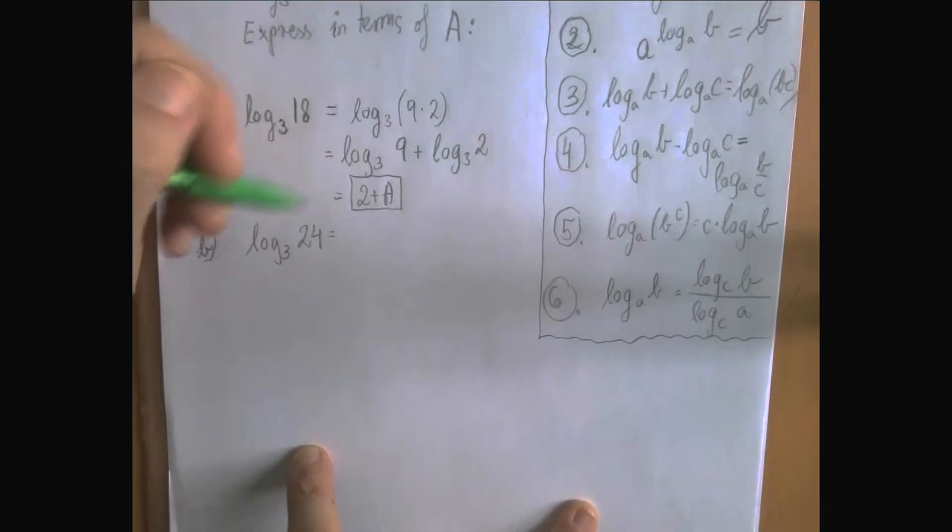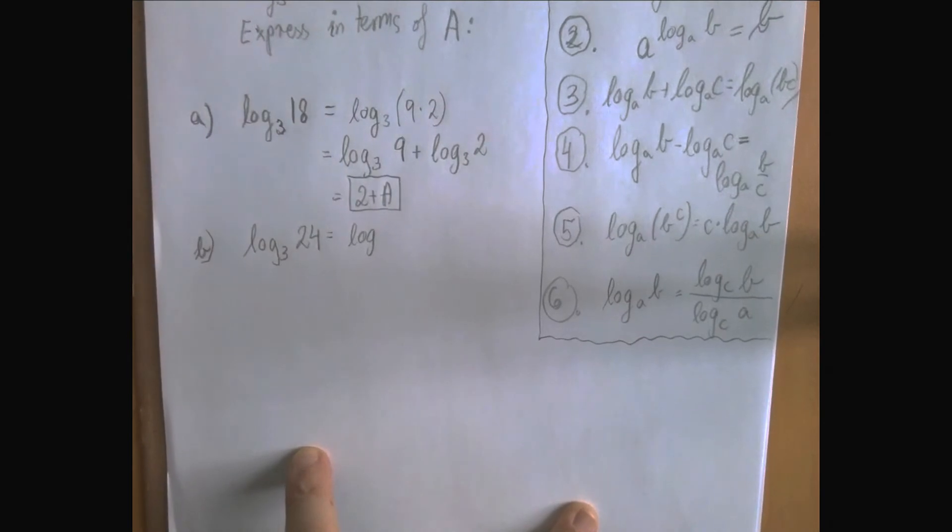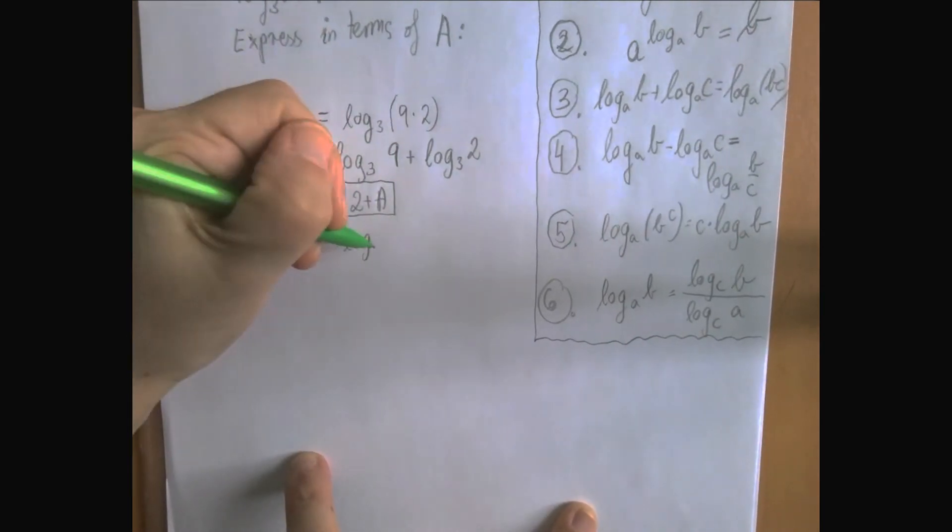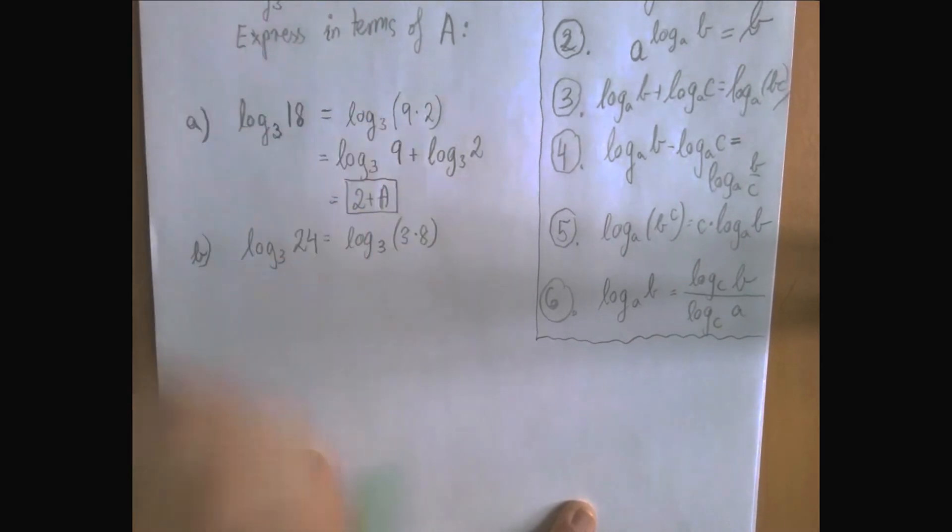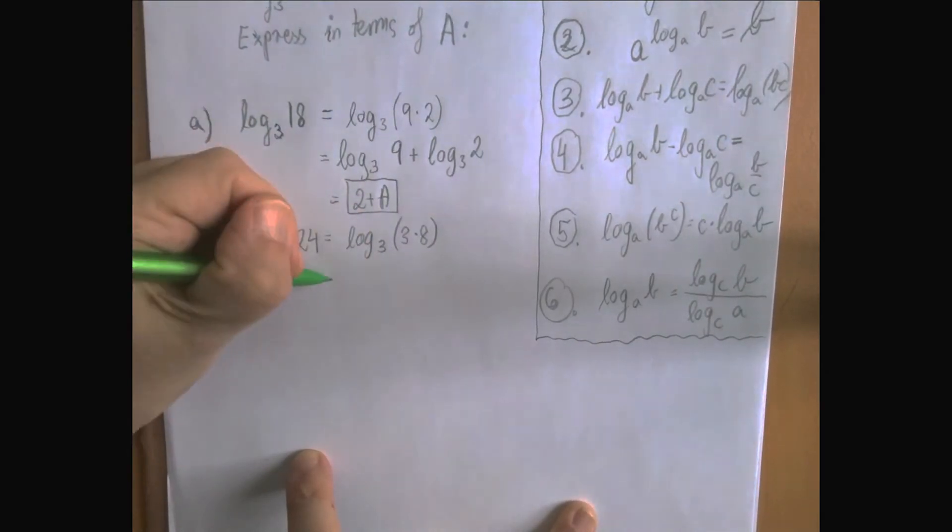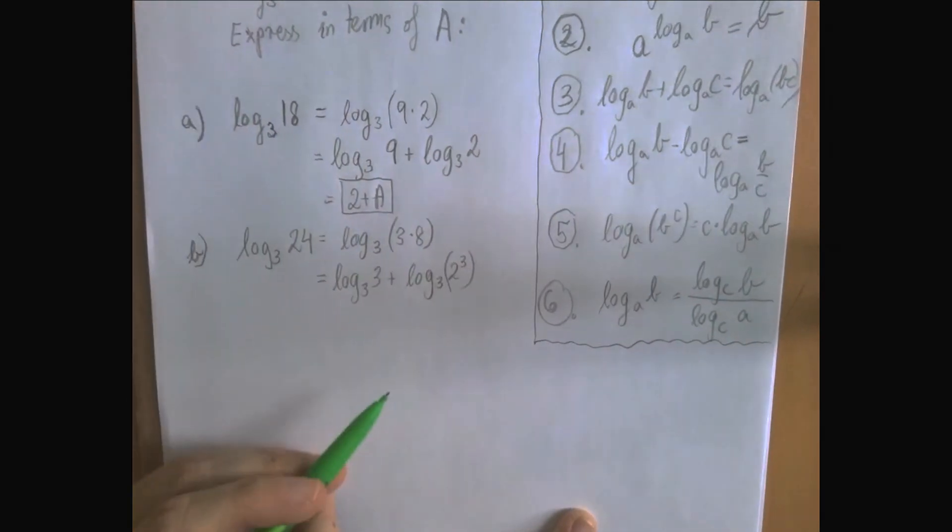Let's look at the next one. Log 3 of 24. Now notice that 18, just like 24, is built from just 2s and 3s. 24 is 3 times 2 times 2 times 2. So again, we're going to separate the 3 part and the 2 part using our newly found logarithmic rule, which means that log 3 of 24 equals log 3 of 3 plus log 3 of 8.